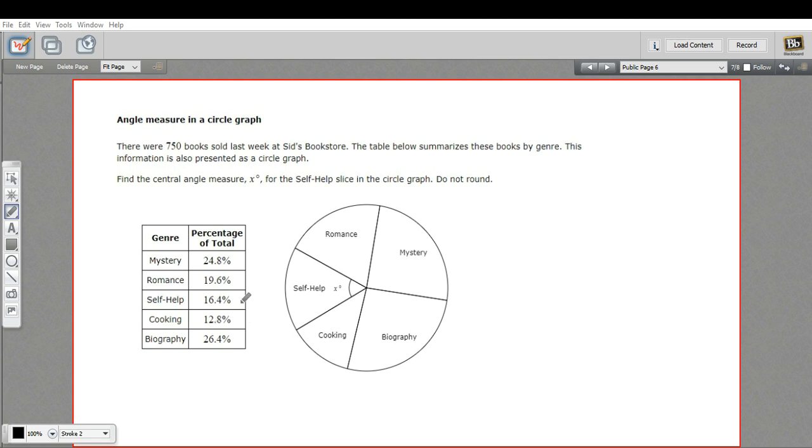which is pretty nice when you have this broken down by percent. Sometimes you'll get a problem where it's just the numbers of books. But with percents, this is pretty easy. Basically, we want the slice of this pie here representing self-help to be 16.4% of the angles in a circle.